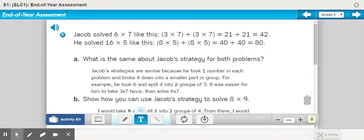So number five reads: Jacob solved 6 × 7 like this: (3 × 7) + (3 × 7) = 21 + 21 = 42. He solved 16 × 5 like this: (8 × 5) + (8 × 5) = 40 + 40 = 80. What is the same about Jacob's strategy for both problems? That's 5a.